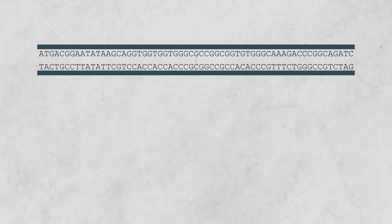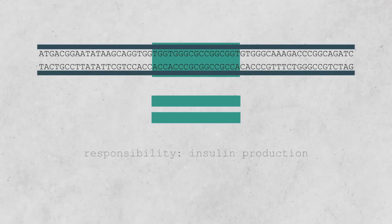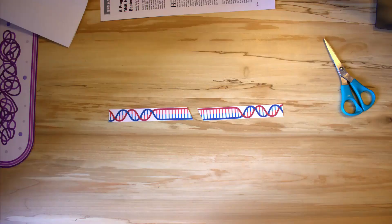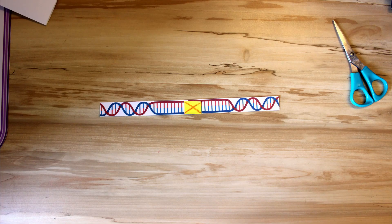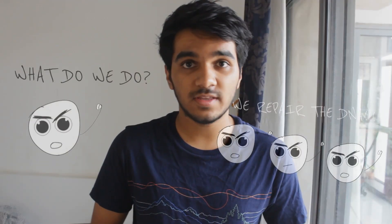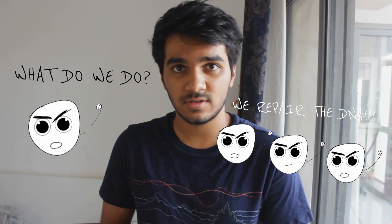Before we go ahead, remember this: a sequence of DNA that is responsible for something is called a gene. Now that the DNA is cut, two things can happen. We can join the broken ends back together, which would disable the gene. Or we can insert a new gene. All of this is done with the help of DNA repair proteins.